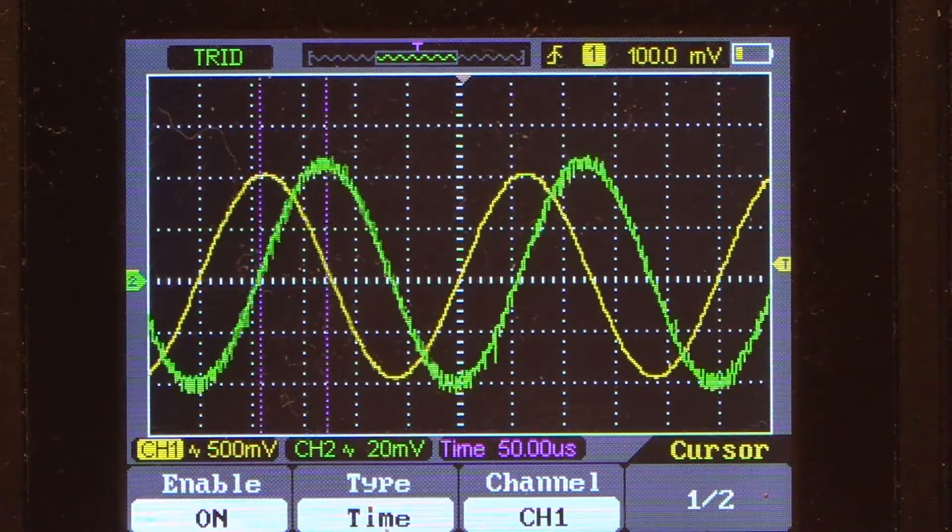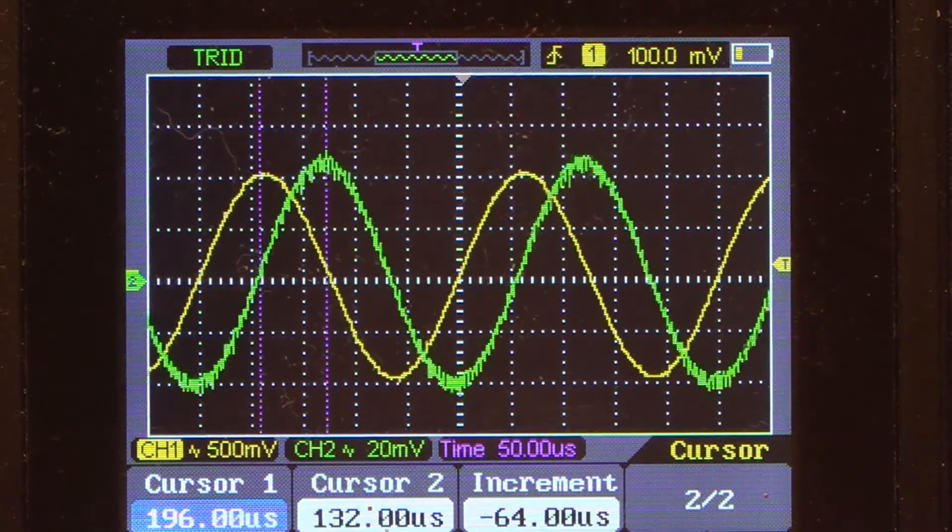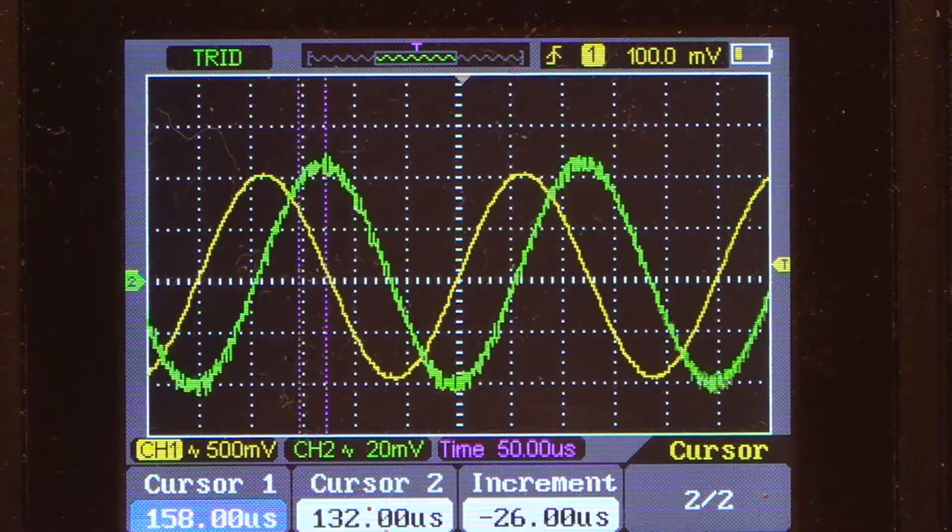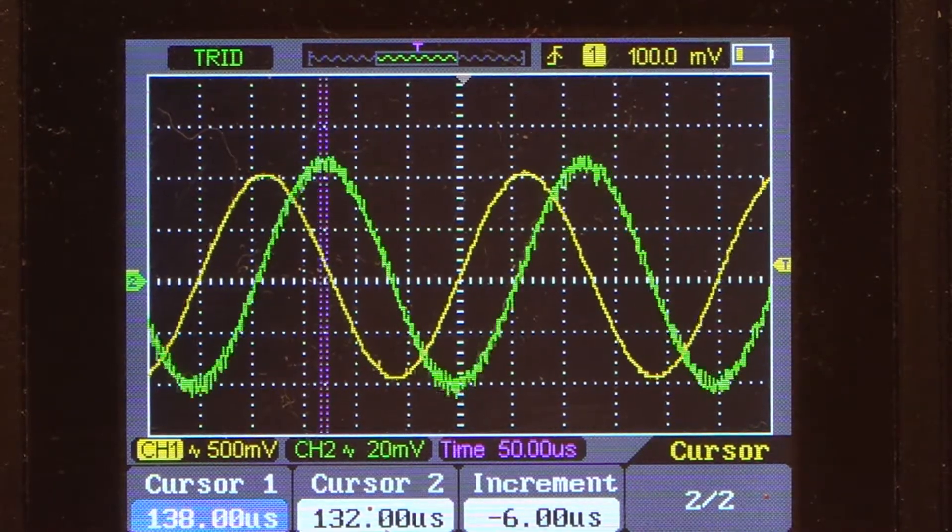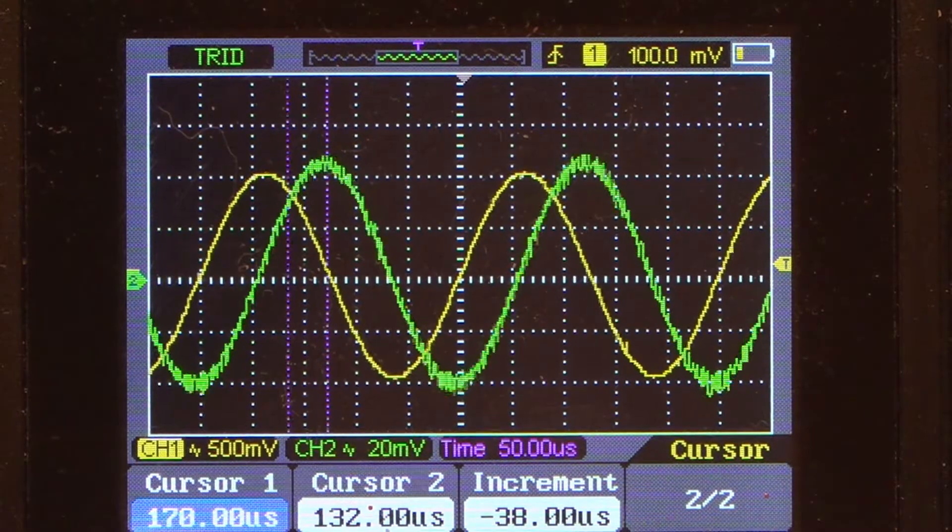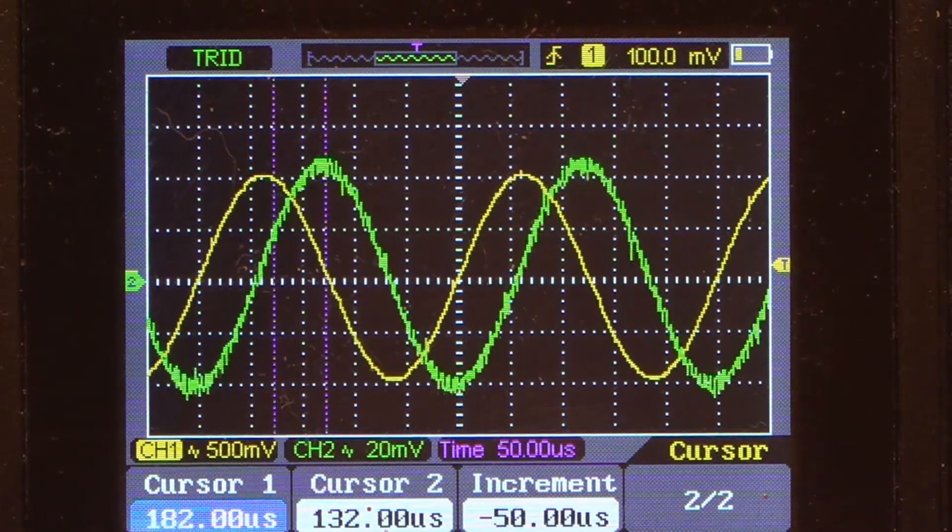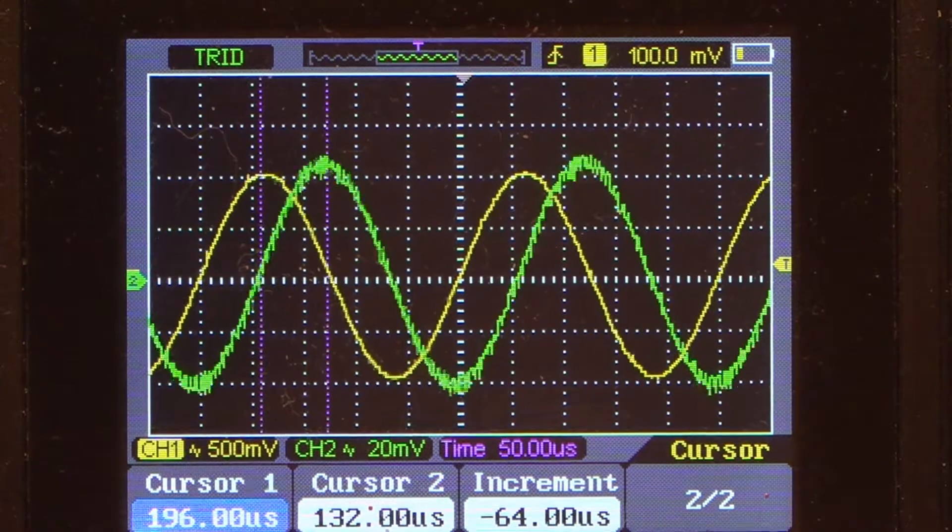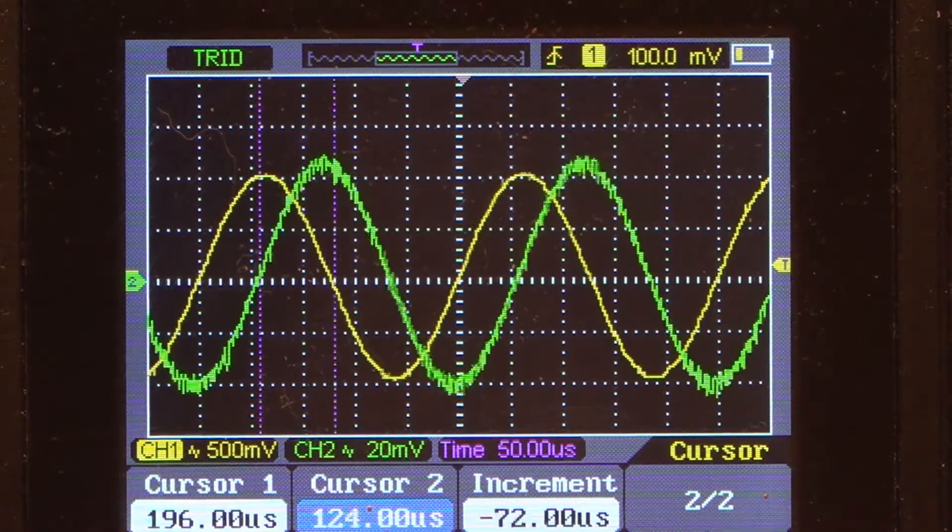So now we can switch it over to time and under time you can see that we get two purple vertical lines. If I go to menu, second page of the menu now, cursor 1 moves the left line to the left and right. And if I slide over to cursor 2 it slides the right line left to right.